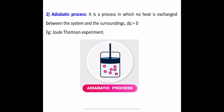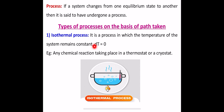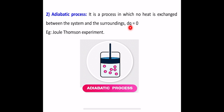The next one is an adiabatic process — a process in which no heat is exchanged between the system and the surroundings, so dq = 0. Such a process where no change in heat is observed is called an adiabatic process. An example is the Joule-Thomson experiment, which we will discuss in our next classes.